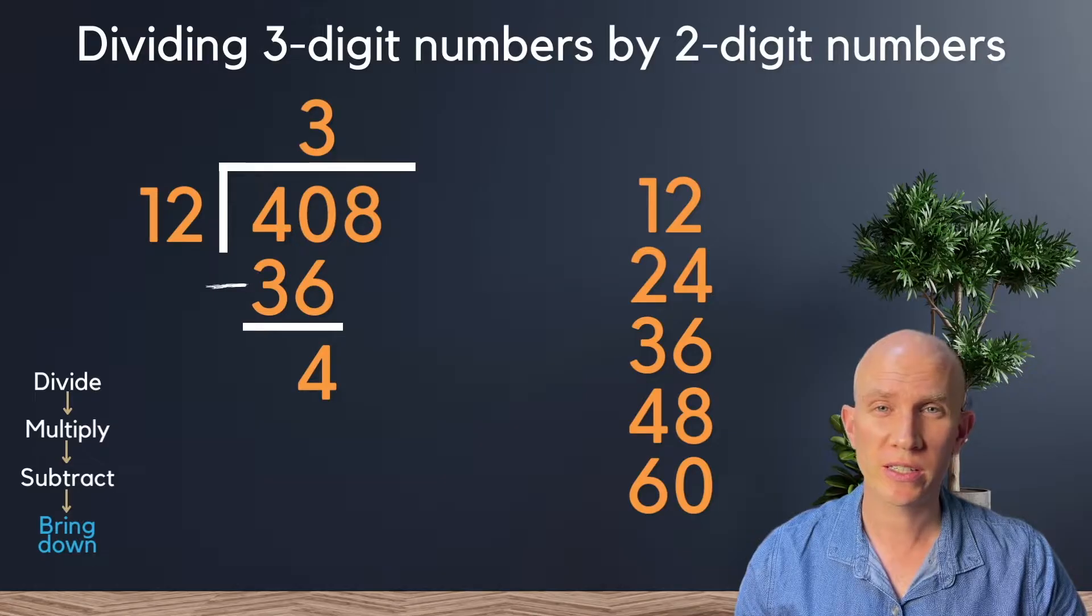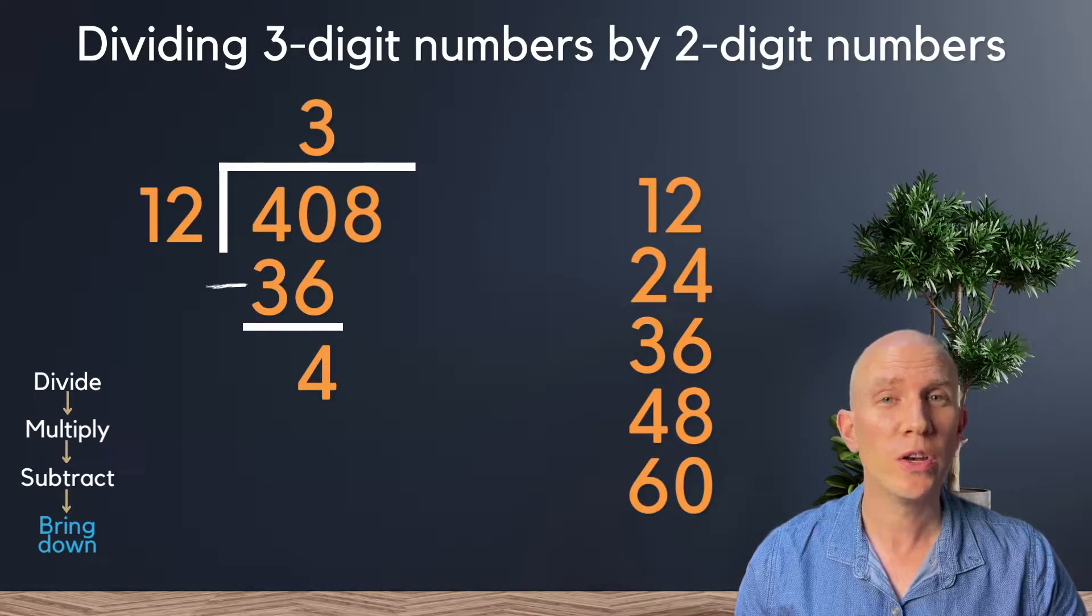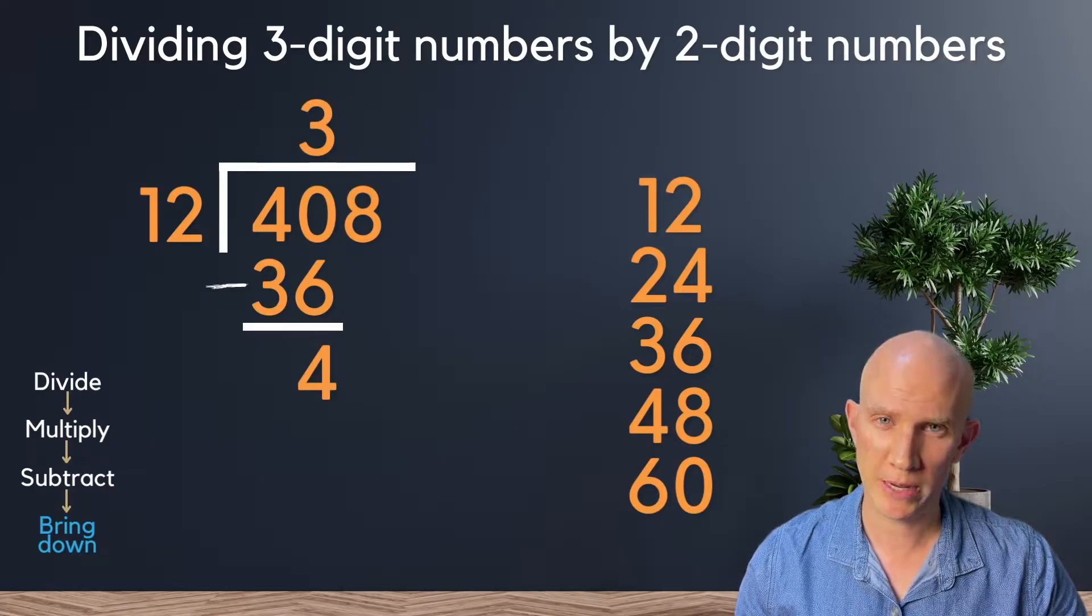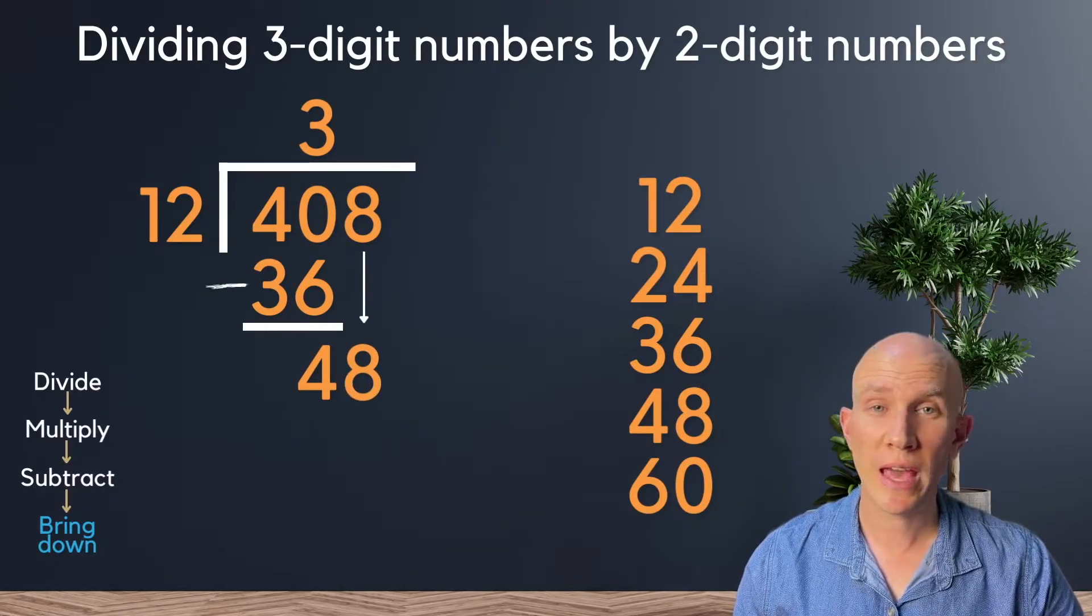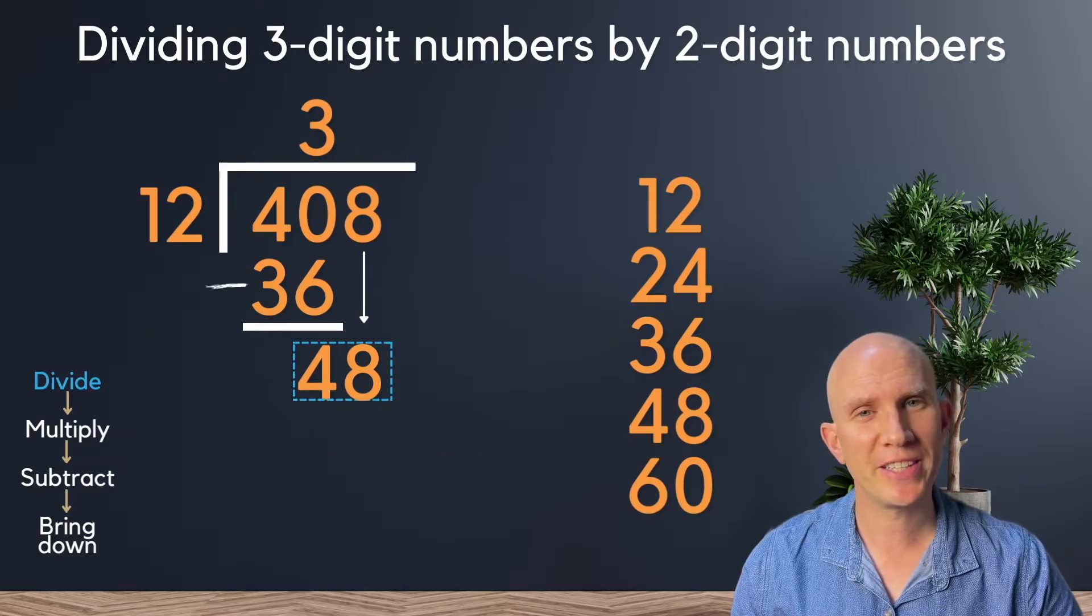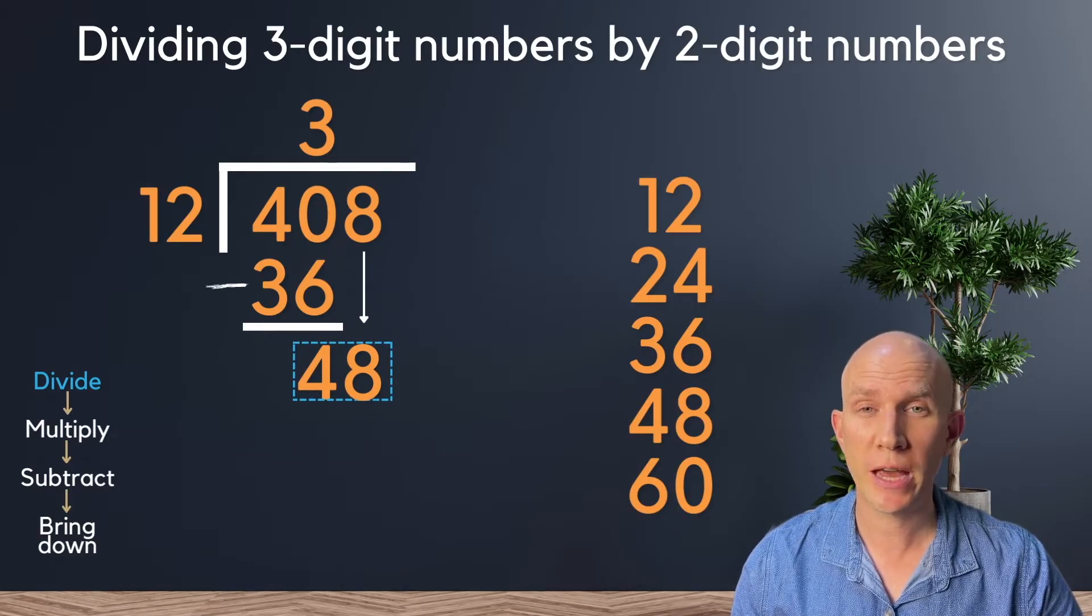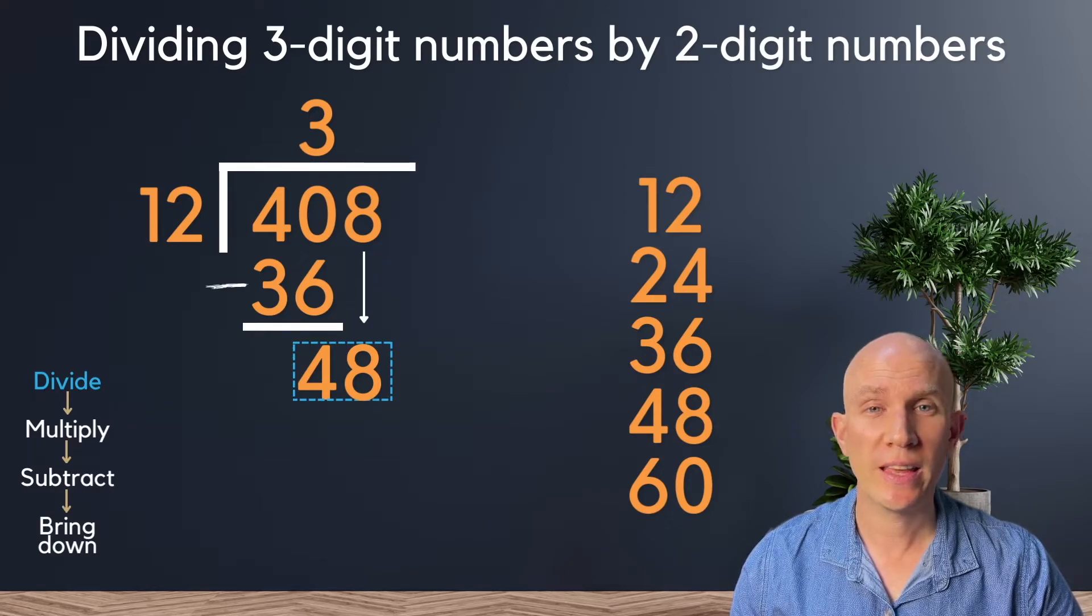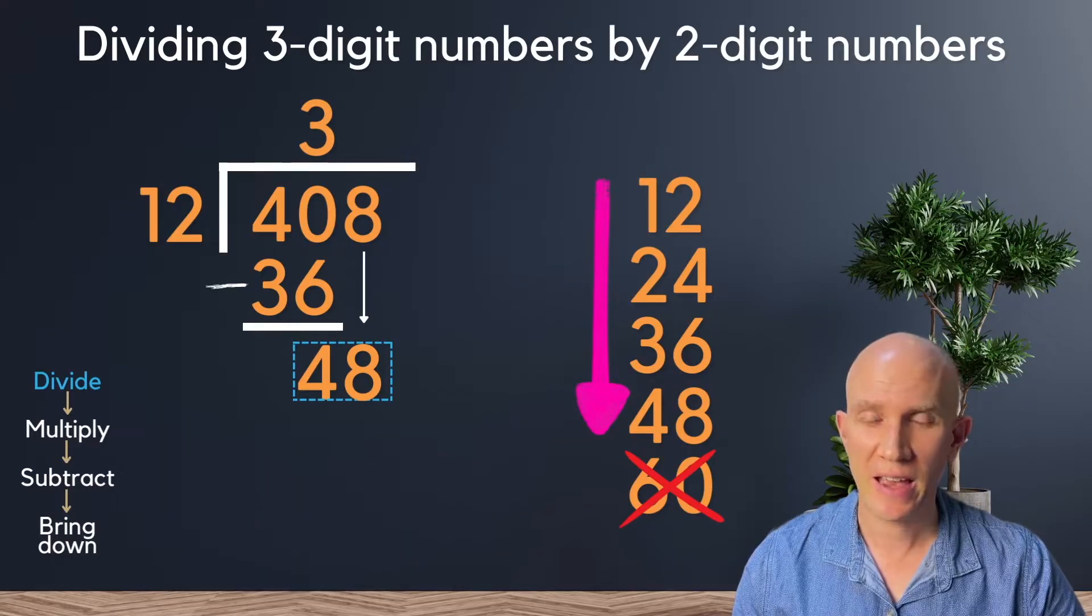And we once again ask ourselves, can 12 go into 4? No, it can't. And that's where the bring down step comes into play. So we bring down the 8 and then start our process all over again. And we say, now can 12 go into 48. Once again, using our multiplication table, we can see that yes, it can. And it can go in four times.